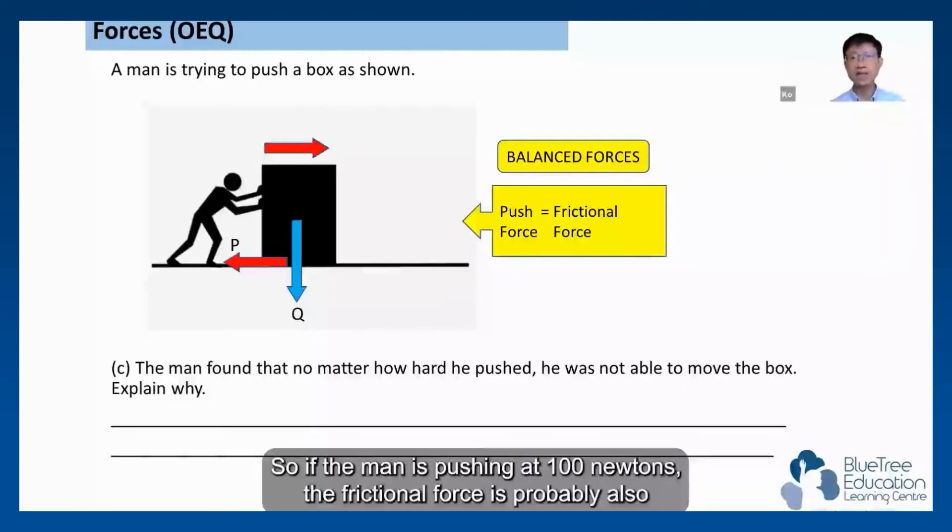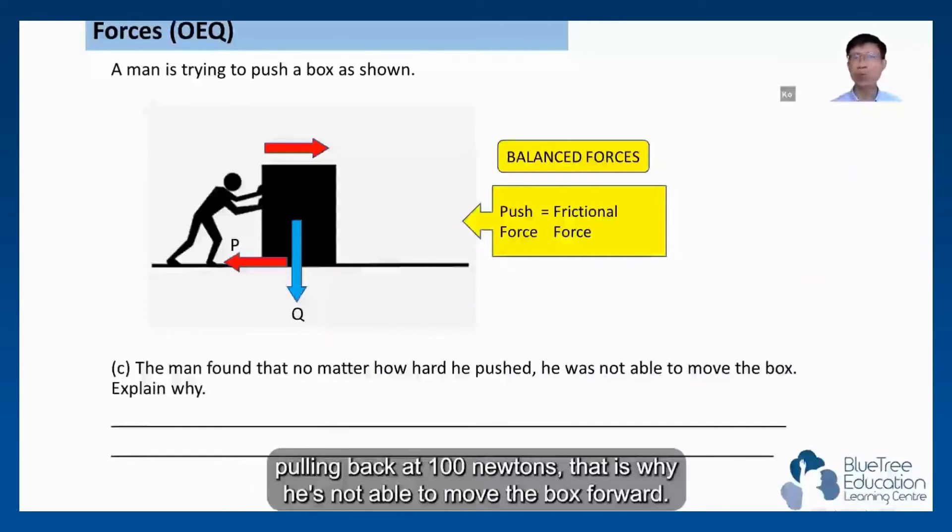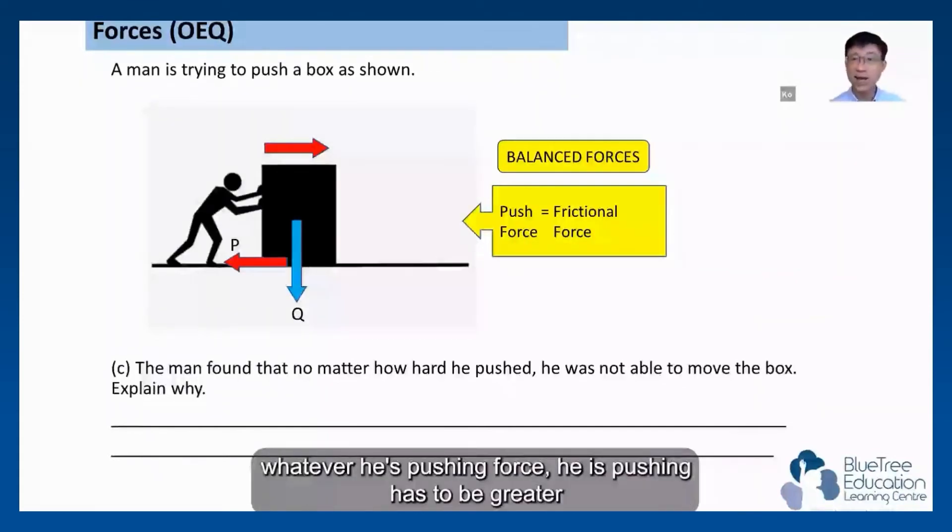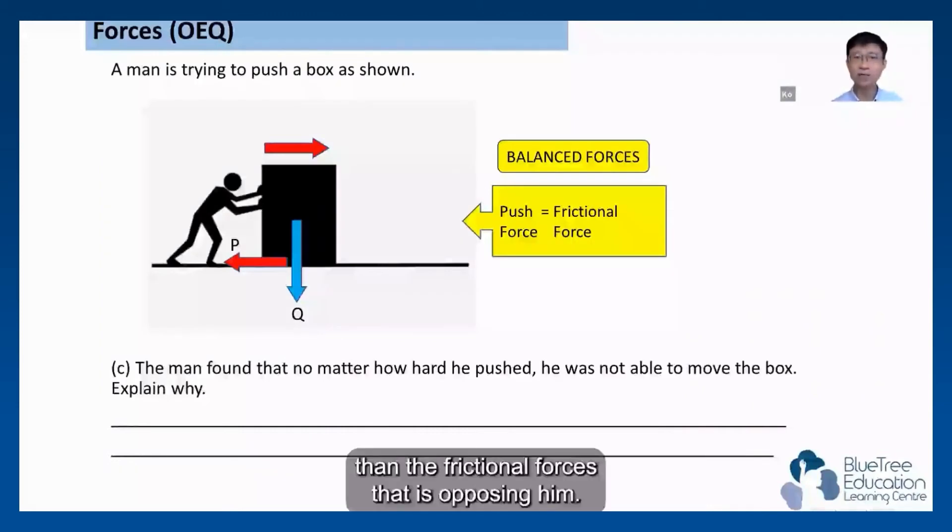So if the man is pushing at 100 newtons, the frictional force is probably also pulling back at 100 newtons. That is why he's not able to move the box forward. So for him to be able to move the box forward, whatever pushing force he is pushing has to be greater than the frictional force that is opposing him.